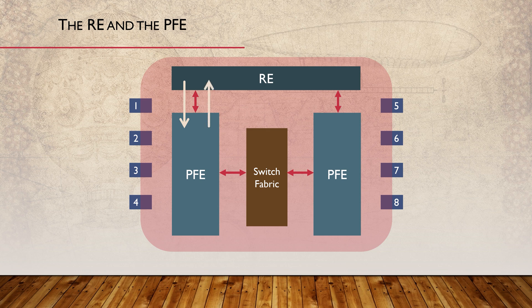The PFE provides the RE with raw data, enabling it to monitor things like packet counters and errors. But also, the RE needs to manage the PFE, including pushing microcode down to the FPCs and making sure it has an up-to-date copy of the forwarding table. And of course, the routing engine needs to live up to its name by participating in routing protocols, building the routing table, and maintaining the forwarding table.